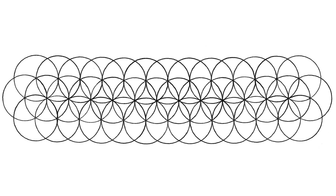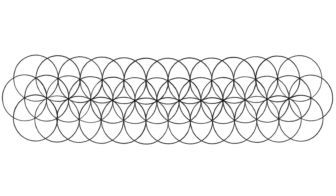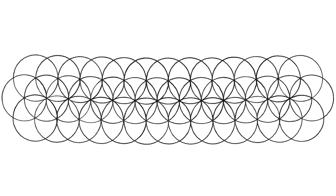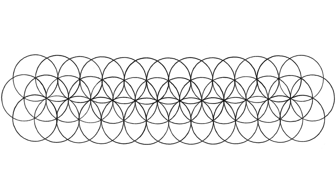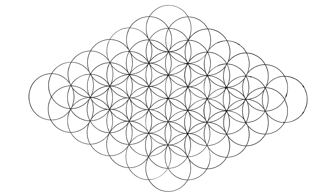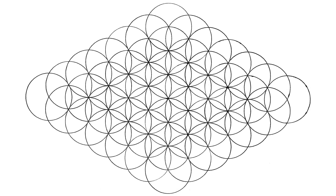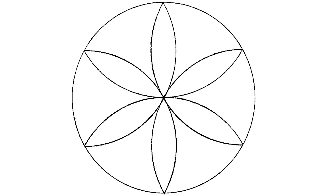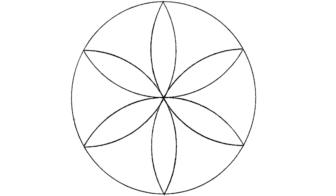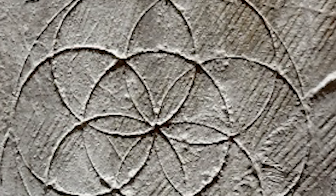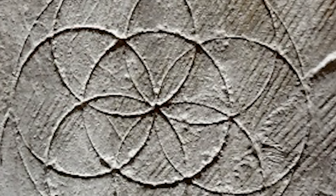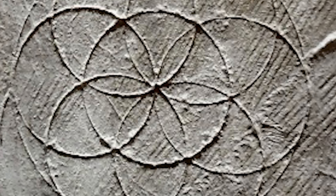What we are looking at now is known as a daisy wheel. The daisy wheel, sometimes called a hexafoil, is a design with six-fold dihedral symmetry composed from six petals arranged radially around a central point, often shown enclosed in a circle. This design can be found dating back to the Bronze Age in Europe in both architecture and in art.